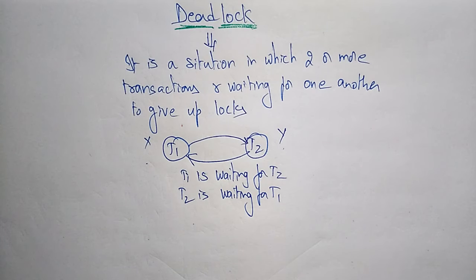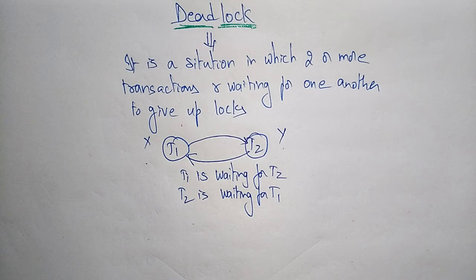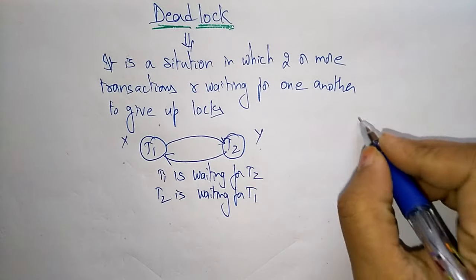For example, suppose you want to go out with your friends and you want your friend to call you. At the same time your friend also wants you to call them. So you're waiting for your friend's call and your friend is waiting for your call. Both are in a waiting state — neither calls the other. That situation is called a deadlock; both are in blocked conditions.